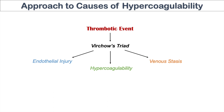So what is hypercoagulability? It's essentially the coagulation cascade in overdrive. It causes increased fibrin clots where they're not supposed to happen. There's a mnemonic I'm going to talk to you about that can help us remember causes of hypercoagulability.